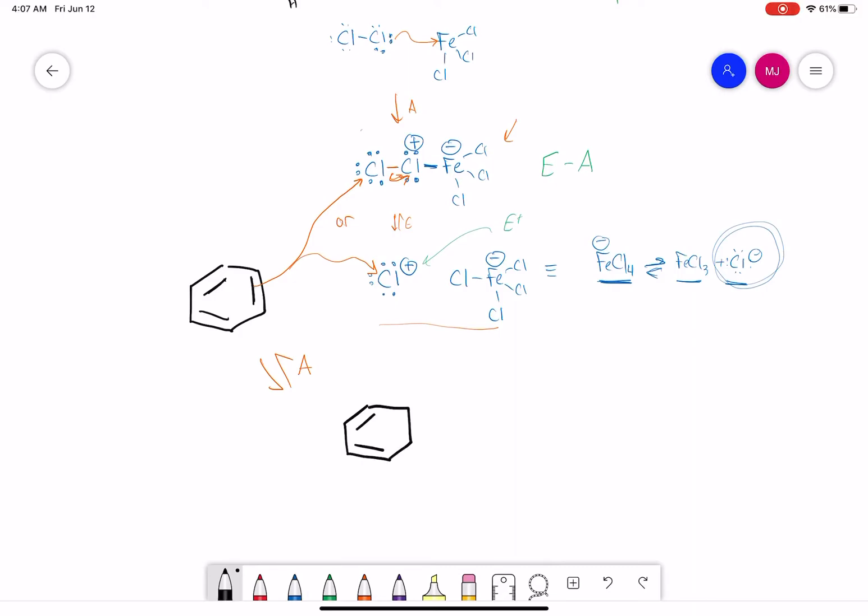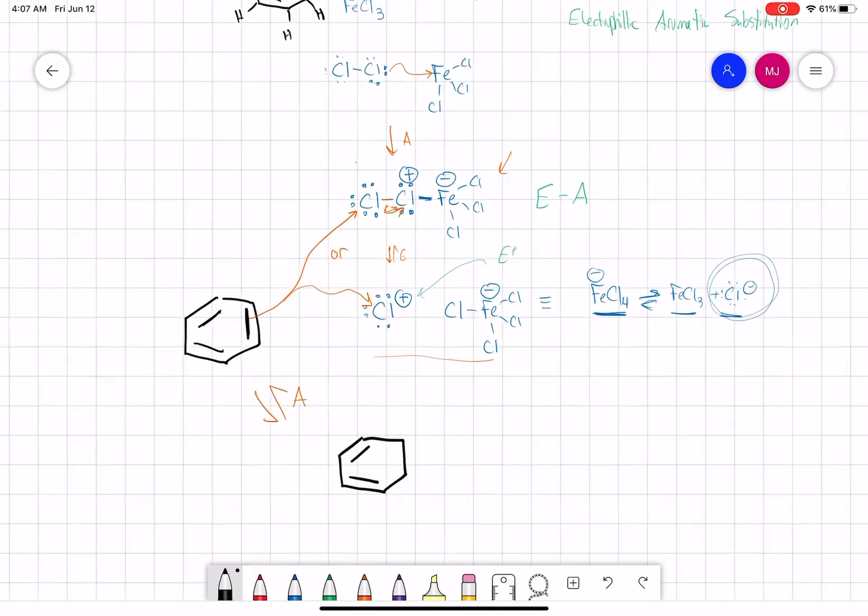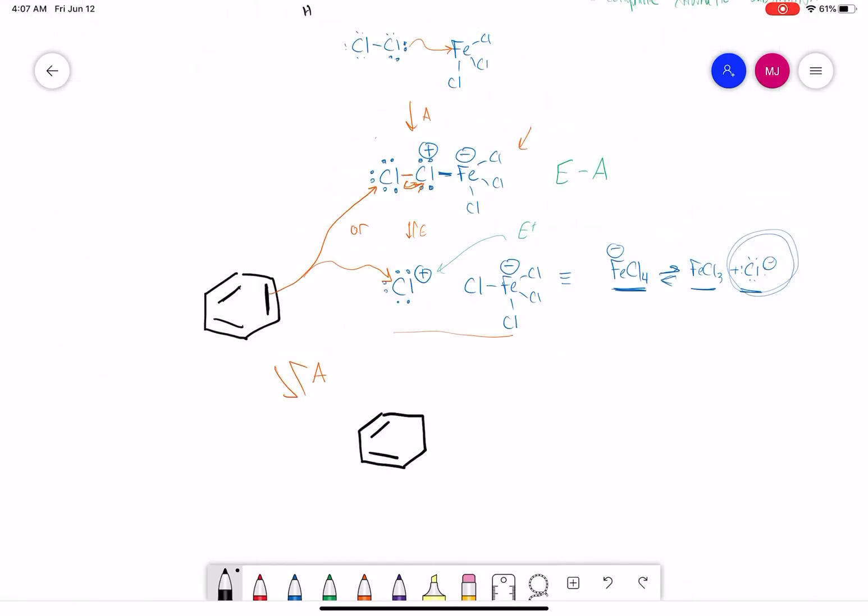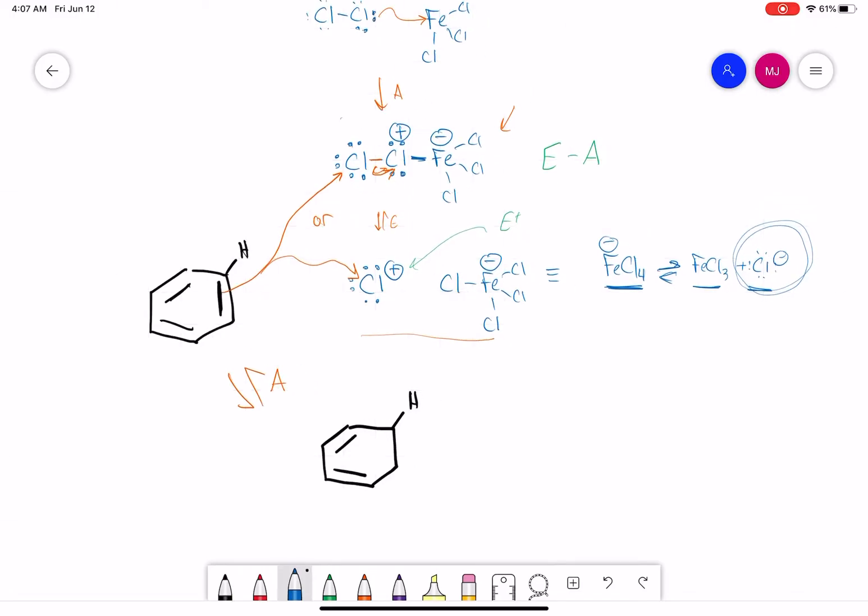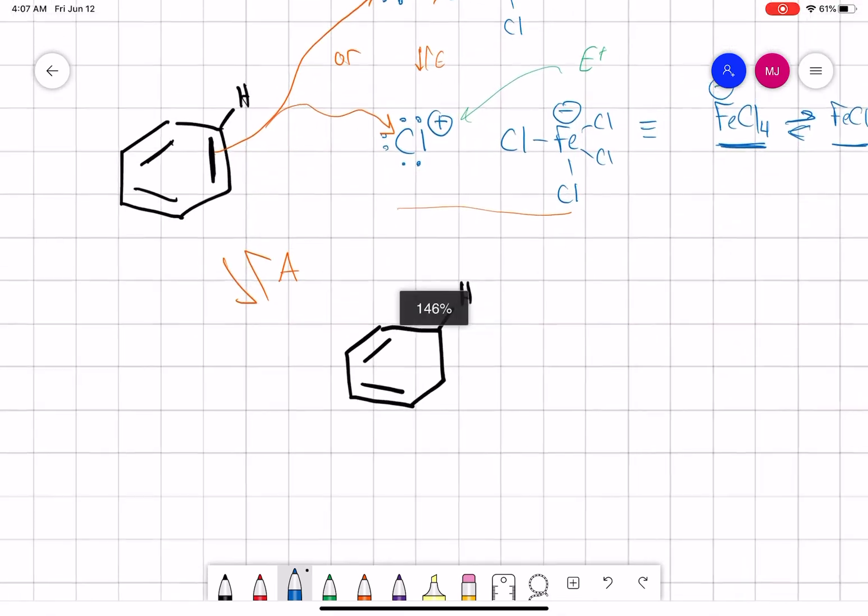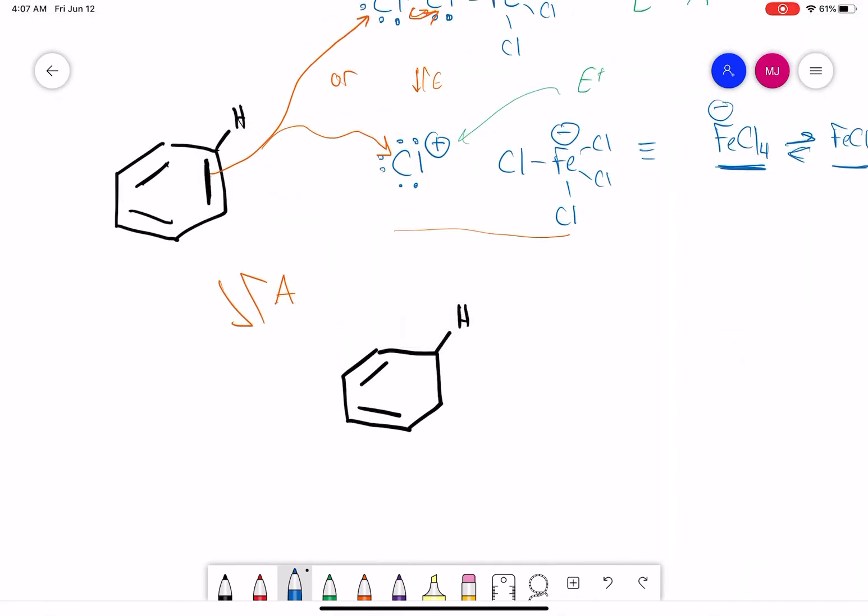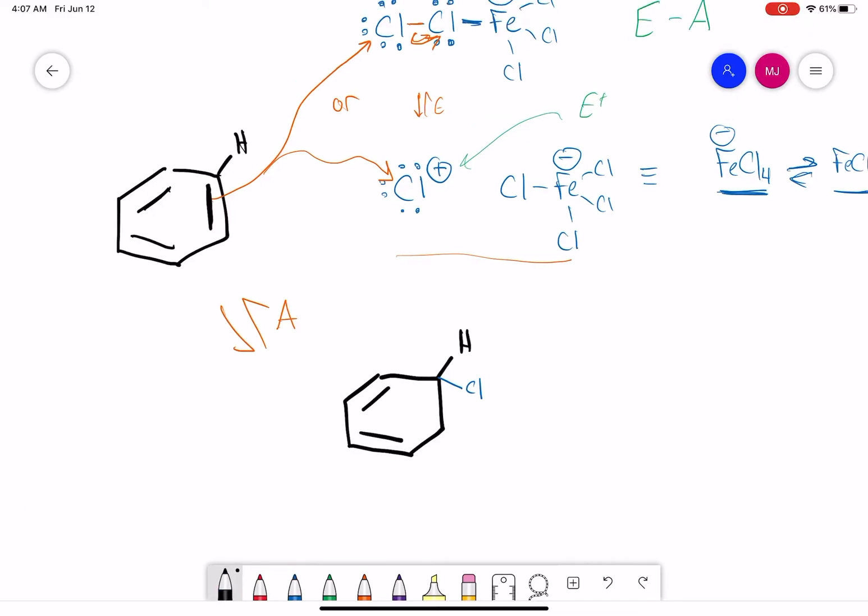So what that means is this bond has broken. I'm going to draw in the hydrogen that was here because that hydrogen is eventually going to disappear. We'll draw this hydrogen in, and we've now formed a new bond to our chlorine. The consequence of that is this carbon here has a positive charge.